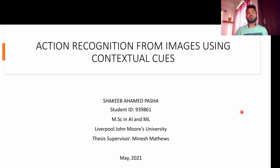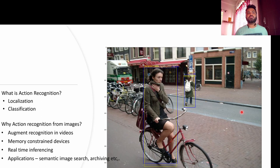Let us understand what action recognition is, specifically with respect to images. Basically, action recognition is a two-stage process with localization and classification. Taking this image as an example, we are first supposed to localize the region of action — for instance, bounding boxes around the primary subjects, which can be human or animal, but in our case we are focusing on human subjects. Having recognized the region of action, the next task is to identify the actual class of action, which is the classification task. This makes it a higher-level visual recognition task than just image classification.